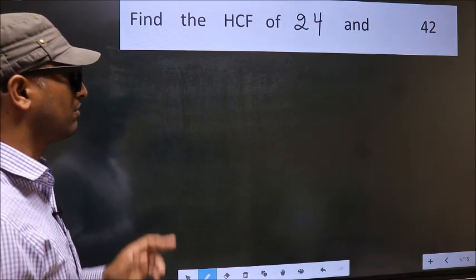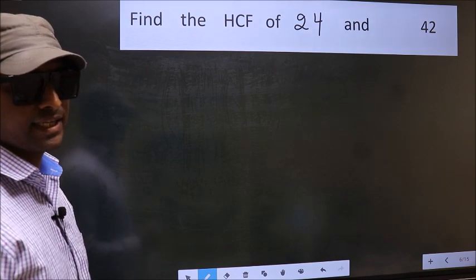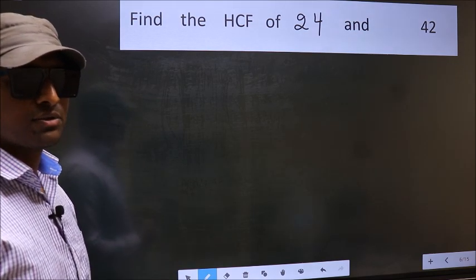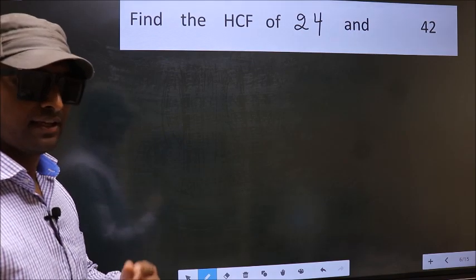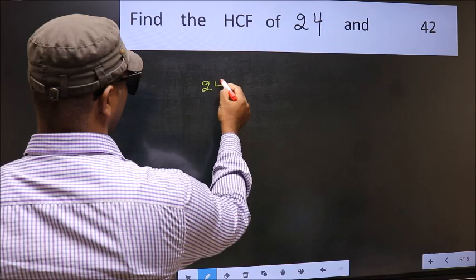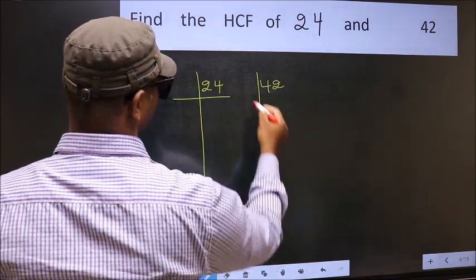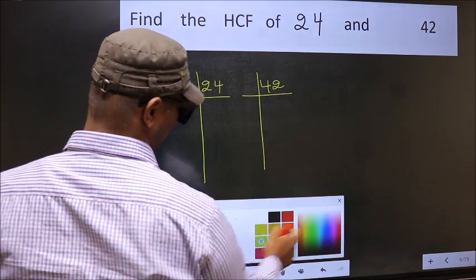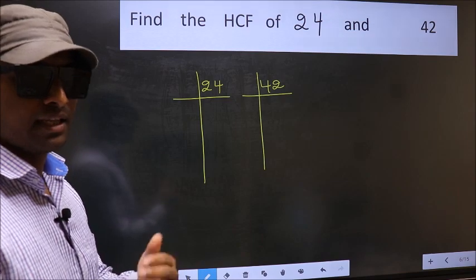Find the HCF of 24 and 42. To find the HCF, we should do the prime factorization of each number separately. What I mean is 24 and 42. This is your step 1.